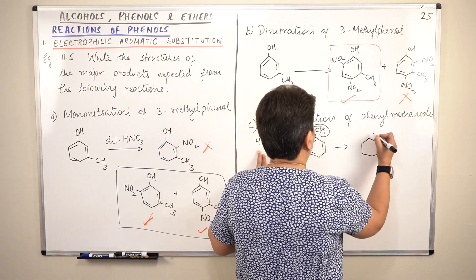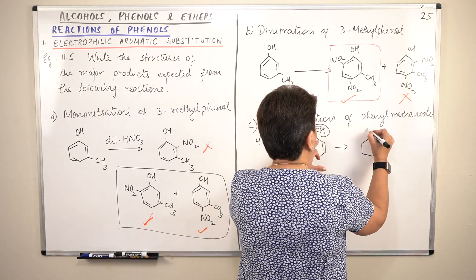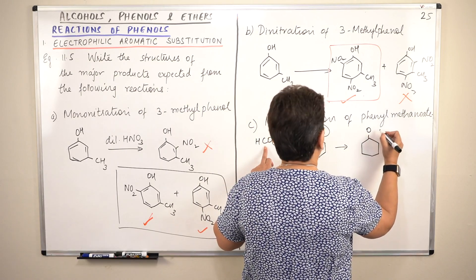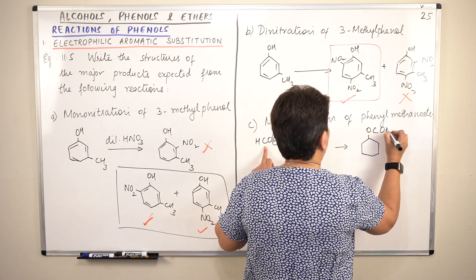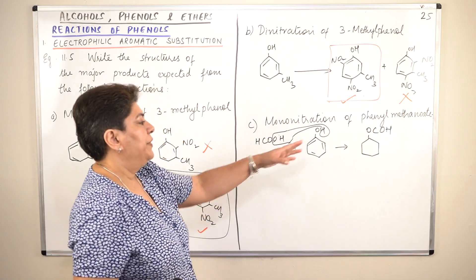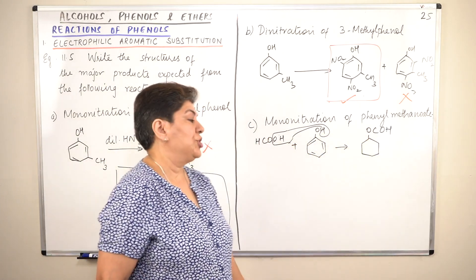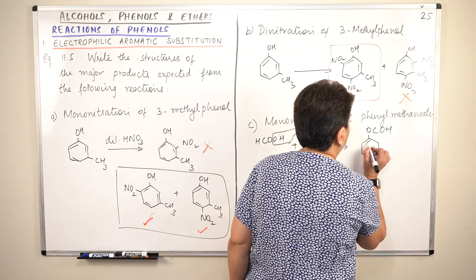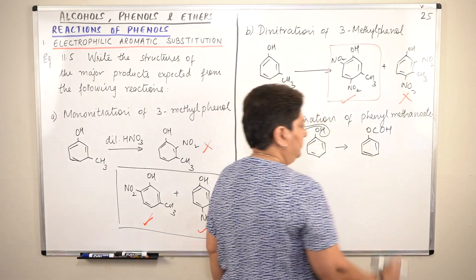So this was the benzene ring. The O from here. And OCOH. The carbon attaches itself to this oxygen. And it already has oxygen and H. So OCOH. This is phenyl methanoate.